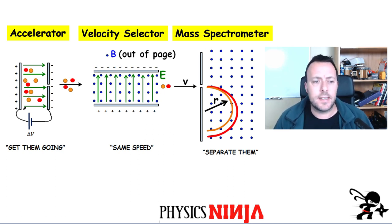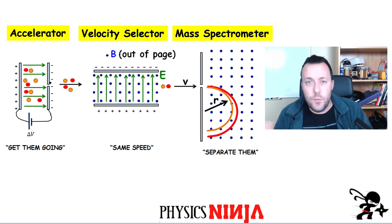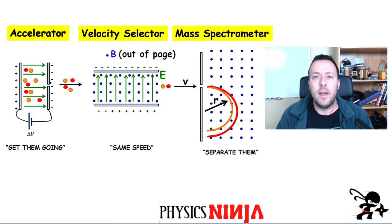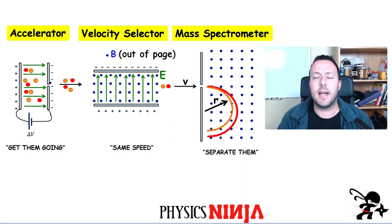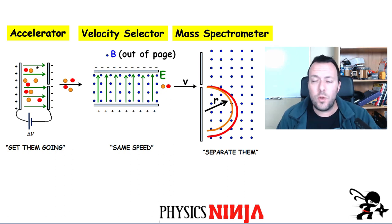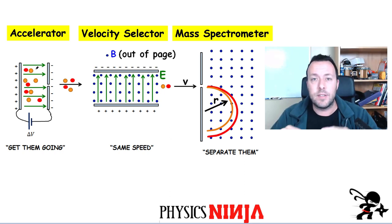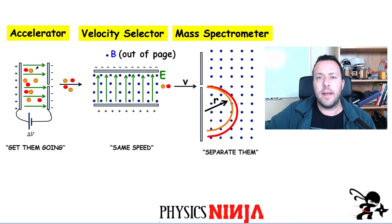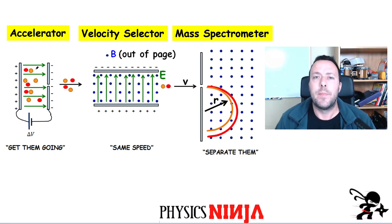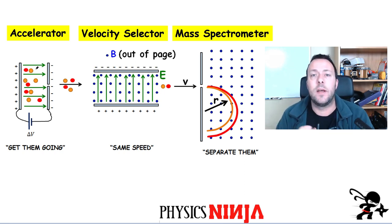The first part is an accelerator, which basically just gets charges to move. We produce an electric field and that gets charges going. The second part is a velocity selector. Once charges come out of the accelerator, you could have different isotopes moving at different speeds, and what you want is a device that selects just one speed — for example, 5,000 or 300 meters per second — so all different particle types come out at the same speed.